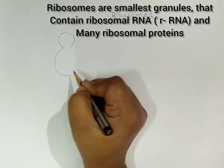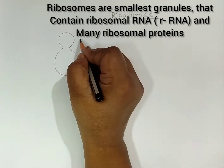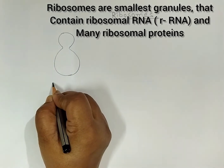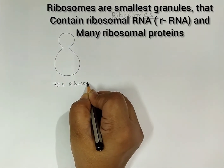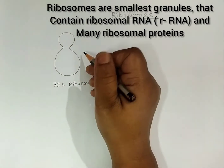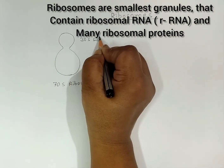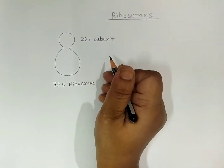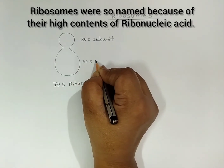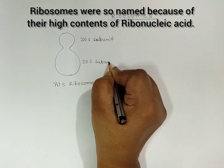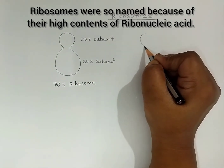Ribosomes are the smallest granules that contain ribosomal RNA (rRNA) and many ribosomal proteins. They were so named because of their high contents of ribonucleic acid.